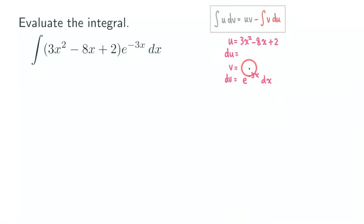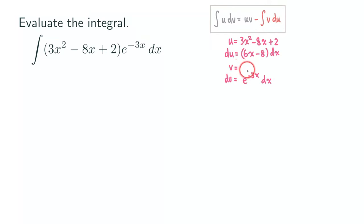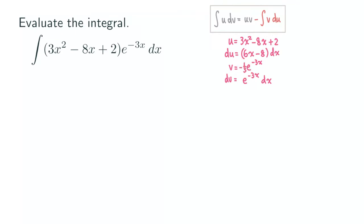We are going to find our du and our v. So du is the derivative of the polynomial: 6x minus 8, quantity times dx. Make sure you put parentheses there. And v is the antiderivative of dv, which is the antiderivative of the exponential function. We need to cancel out the minus 3 from the chain rule, so we get negative 1 third e to the negative 3x.